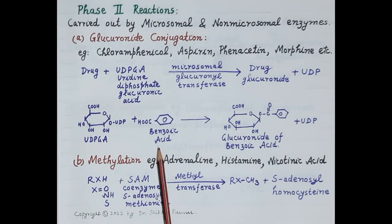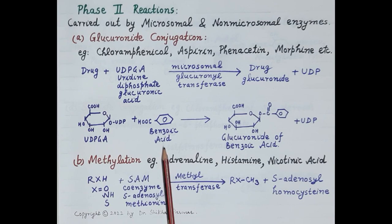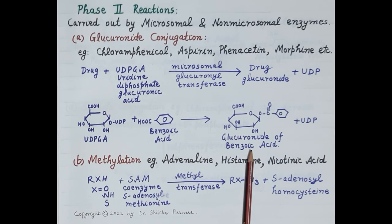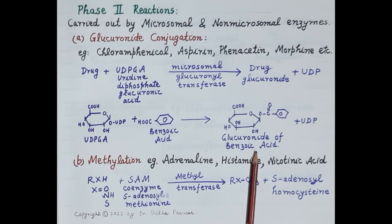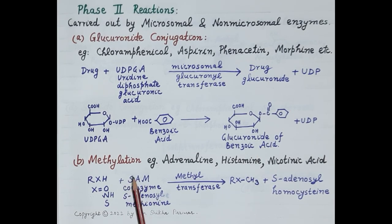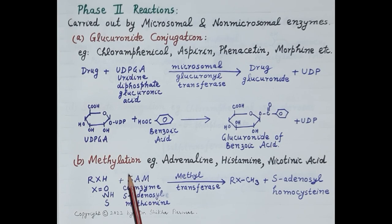Now look at this example: benzoic acid conjugates with glucuronic acid to produce a glucuronoid of benzoic acid, which is excreted easily from the body. The second type of conjugation reaction is methylation.